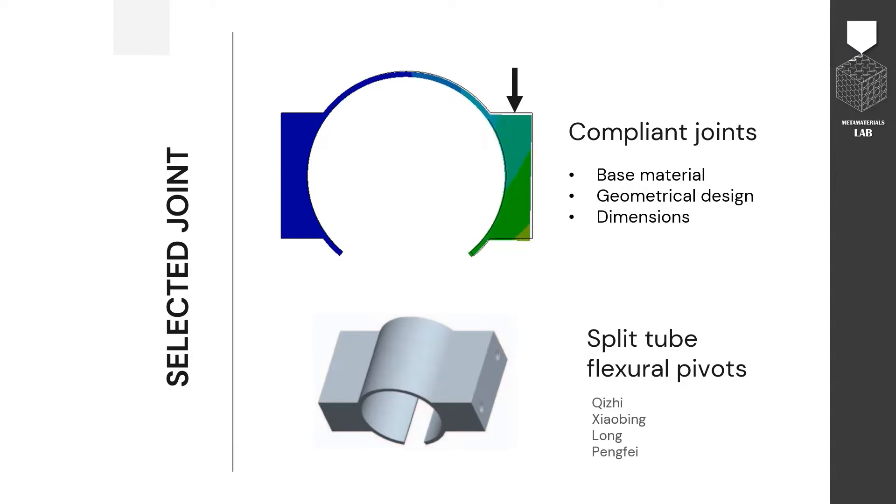Compliant joints owe their motion to three main aspects, which are base material, geometrical design, and dimensions.